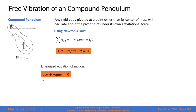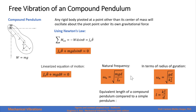In terms of the radius of gyration, recall that the radius of gyration k is defined as the square root of the mass moment of inertia divided by the mass. We can substitute those two terms by the radius of gyration squared, and thereby find an equivalent length of the compound pendulum relative to the simple pendulum analyzed previously.